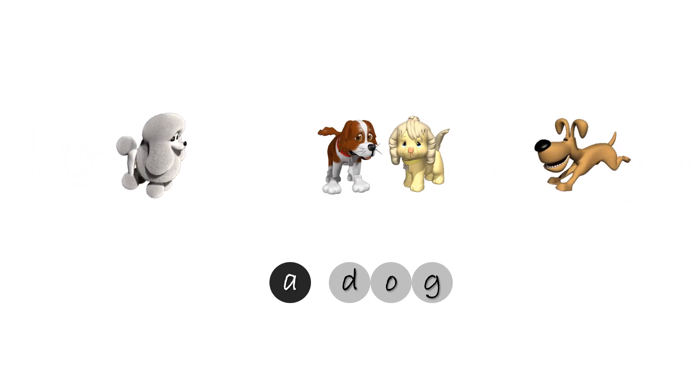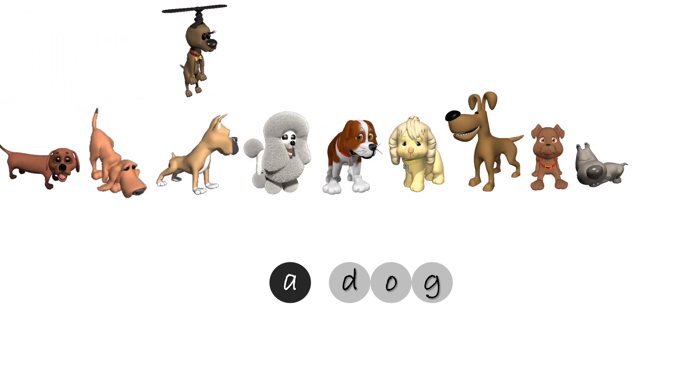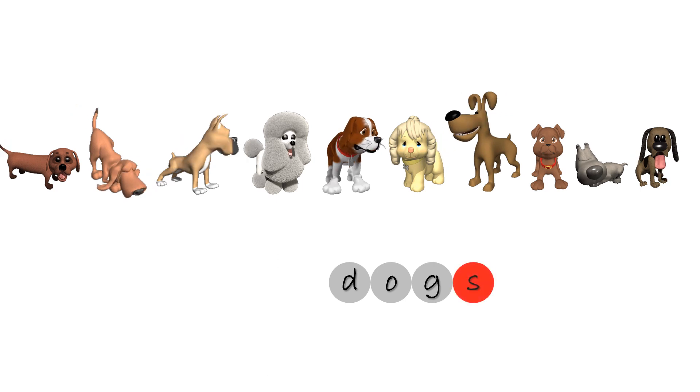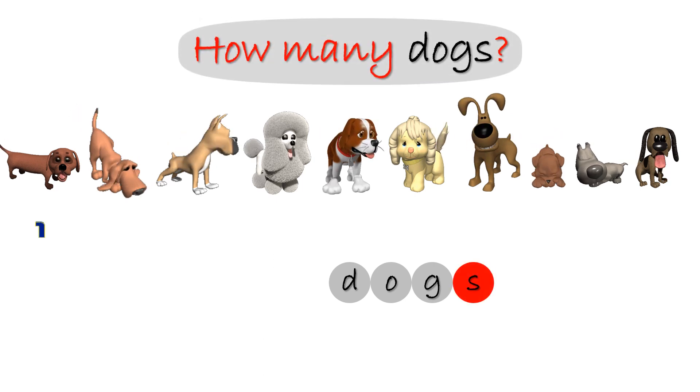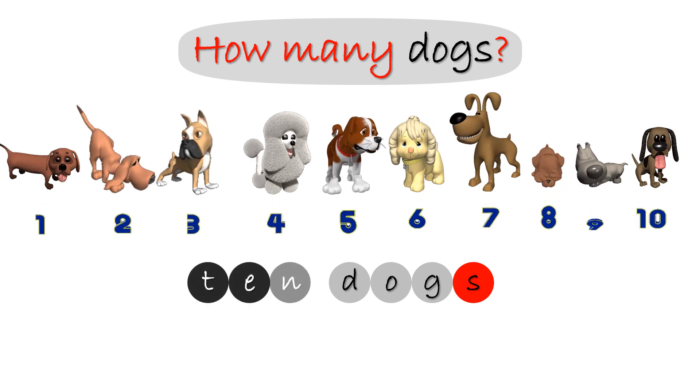Dog. A dog. Dogs. How many dogs? One, two, three, four, five, six, seven, eight, nine, ten. Ten dogs.